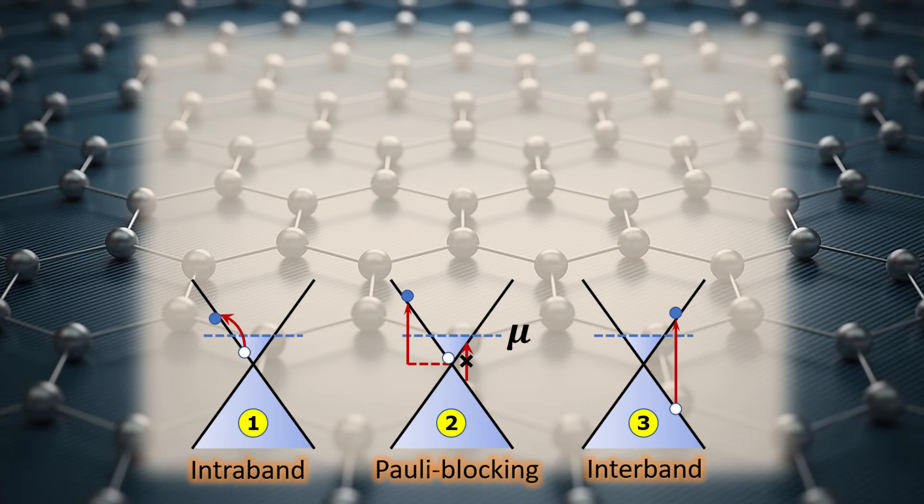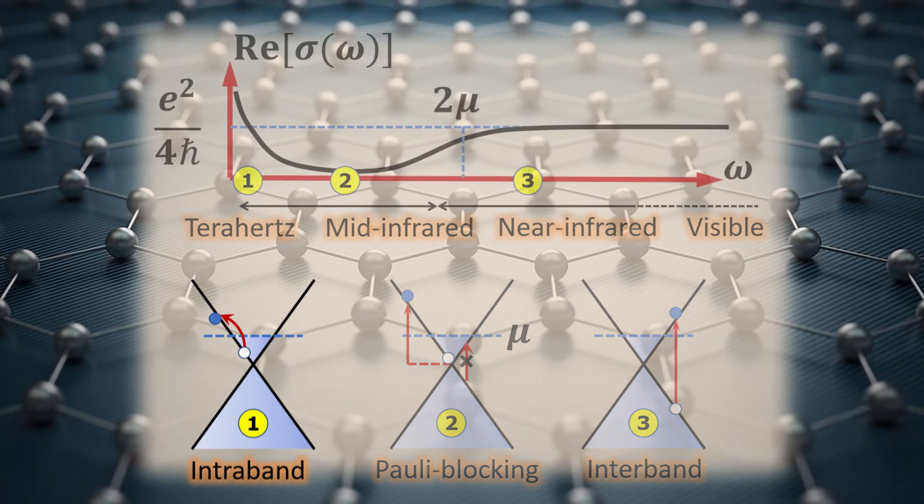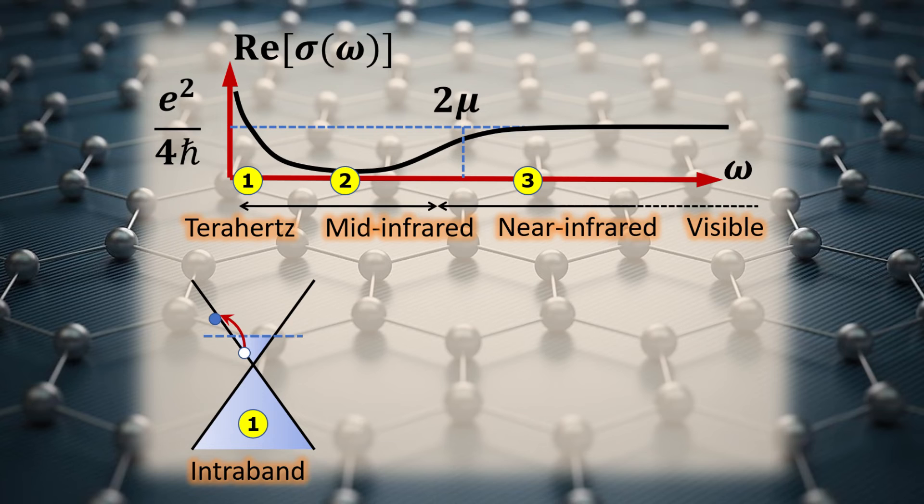The dynamic electrical conductivity of graphene describes the electron response to optical excitations and can be divided into three fundamental regimes. In regime 1, where the frequency is low, such as in the terahertz spectrum, the photon leads to electron excitation within the same band. This intraband transition is mediated through momentum relaxation via disorders in the material. The optical conductivity in this regime follows the well-known Drude conductivity.